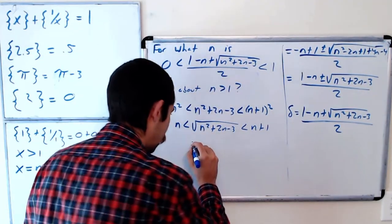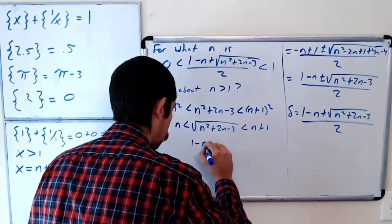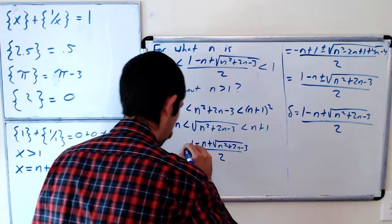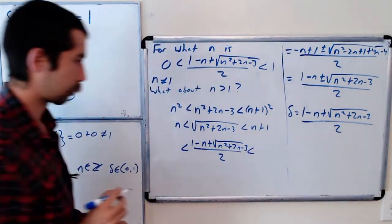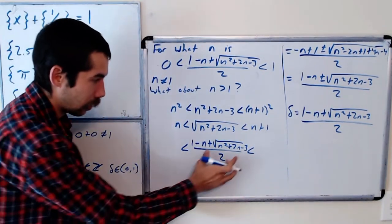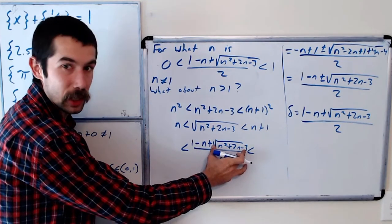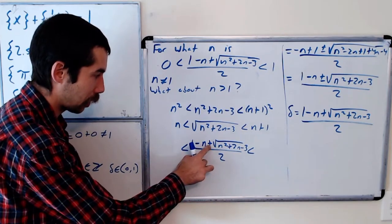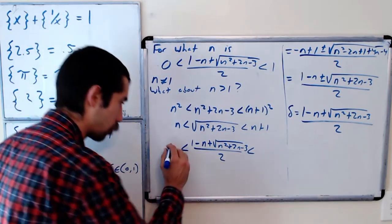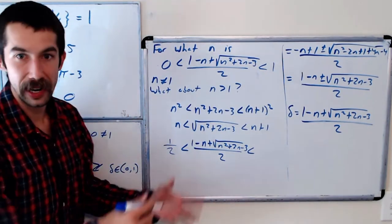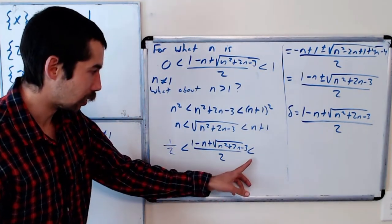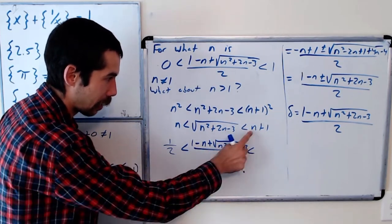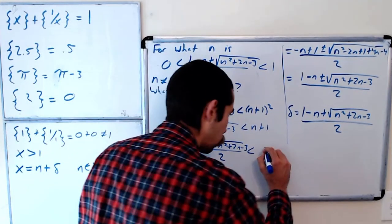So this expression here is bounded between well if this square root is as small as possible we would have 1 minus n plus n over 2. So the smallest this could be is 1 half for any n greater than 1. And the largest this could be is when this is n plus 1. So it's 1 minus n plus n plus 1 over 2, which is 1.